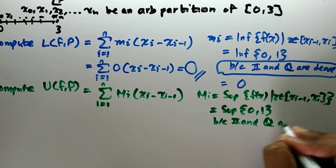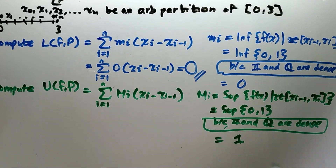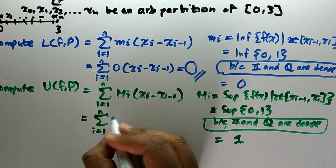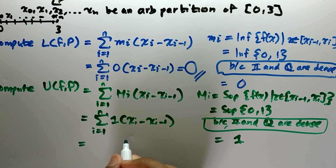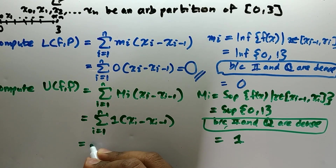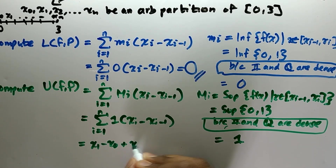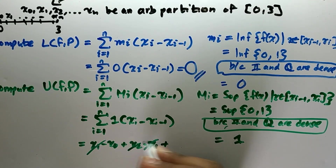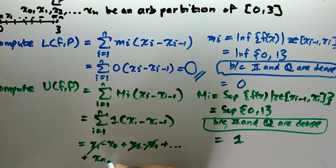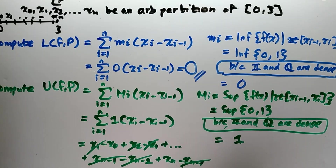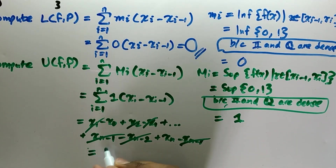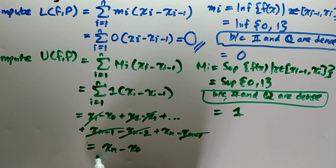Since rationals and irrationals are dense, we justify that there are only two possible values, so capital M_i is 1. Plugging 1 back in for M_i, we can expand the summation of (x_i minus x_{i-1}) to see the telescoping pattern: (x_1 - x_0) + (x_2 - x_1) + ... + (x_n - x_{n-1}). The intermediate terms cancel out, and we are left with x_n minus x_0.